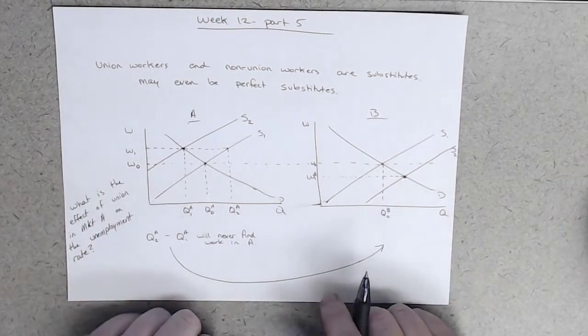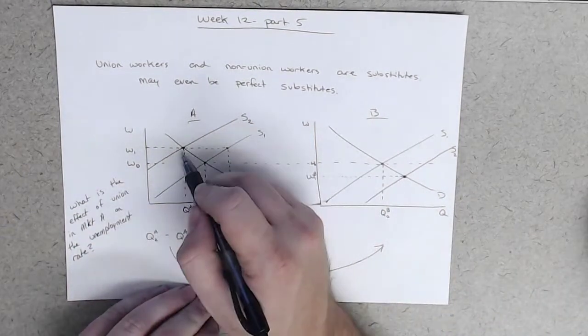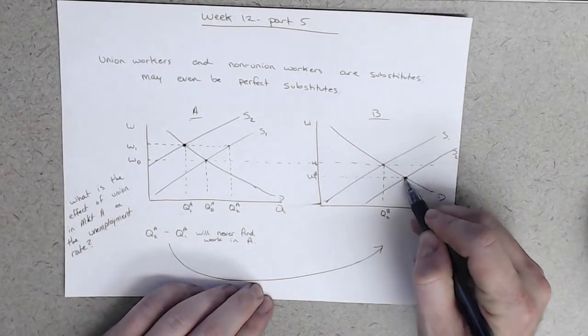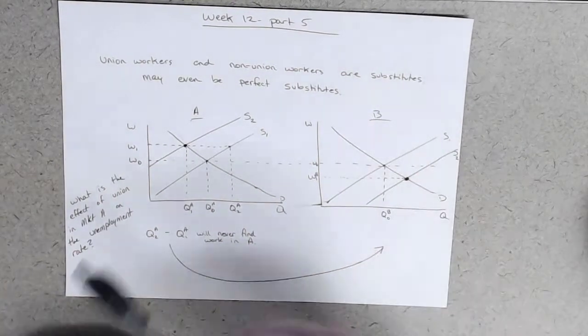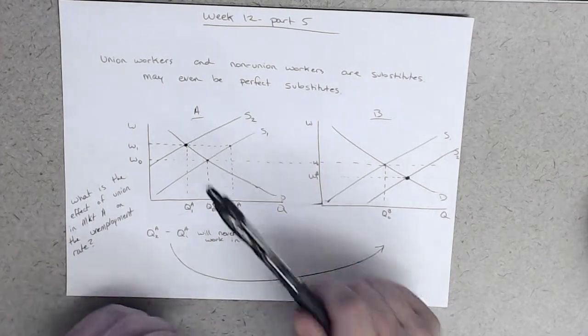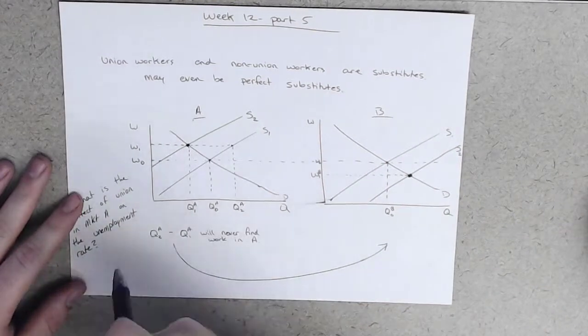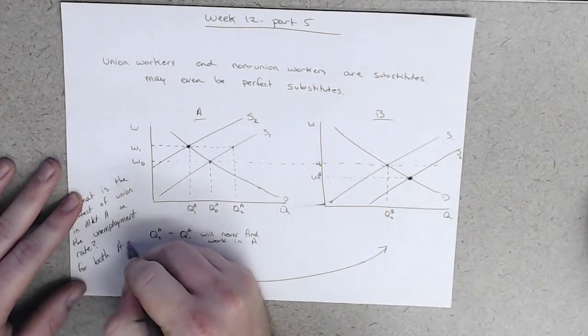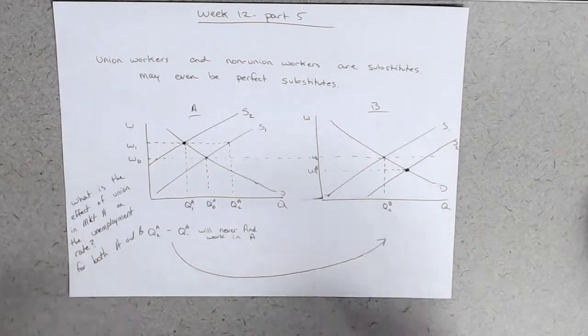And that all these things happen, that the supply curve for labor shifts until it gets to an equilibrium here and the supply curve for labor in B increases until it gets to an equilibrium there. So the question is, what is the ultimate effect of unions in market A on the unemployment rate for both A and B?